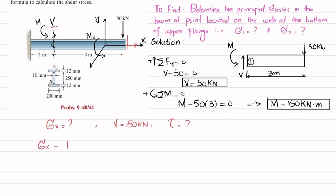The normal bending stress is sigma x = M·y / I, where M is the bending moment we calculated. Y is the distance from the neutral axis to point A. Since the beam is symmetric, the neutral axis is at mid-height. Point A is at the bottom of the upper flange, so Y = 250 mm / 2 = 125 mm, or 0.125 m.